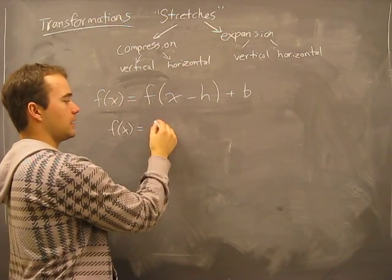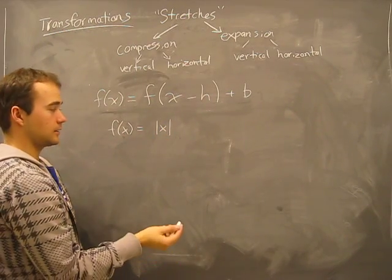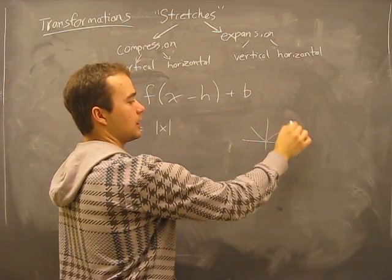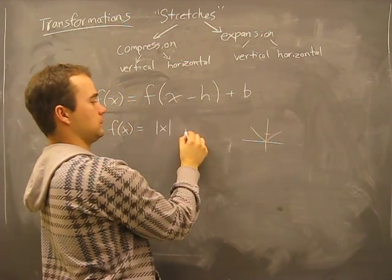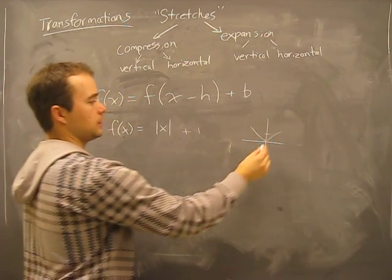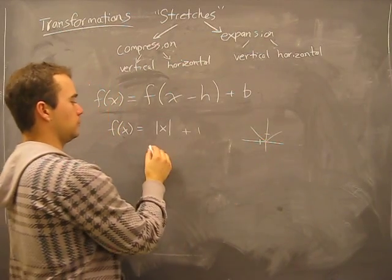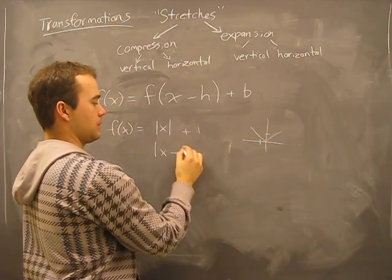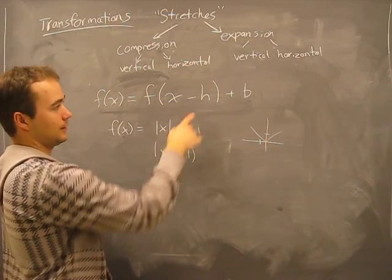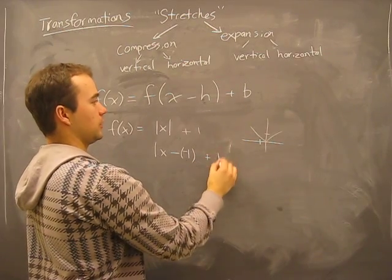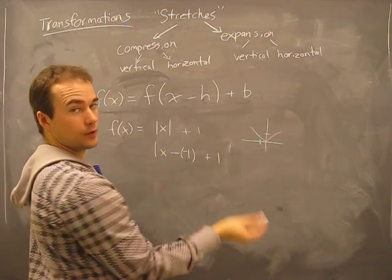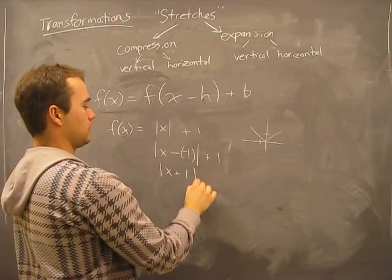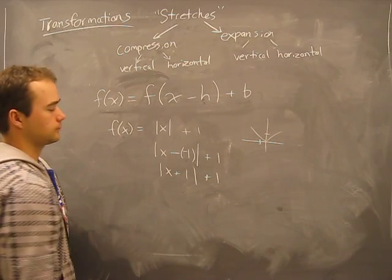If we start with f of x is something basic like the absolute value of x, really if we wanted this graph to be translated up one we would go plus one. If we wanted it to be translated to the left one, left one is minus one. That would be the h value is minus one plus one, b is how far you want in the y axis. So this would be x plus one plus one.